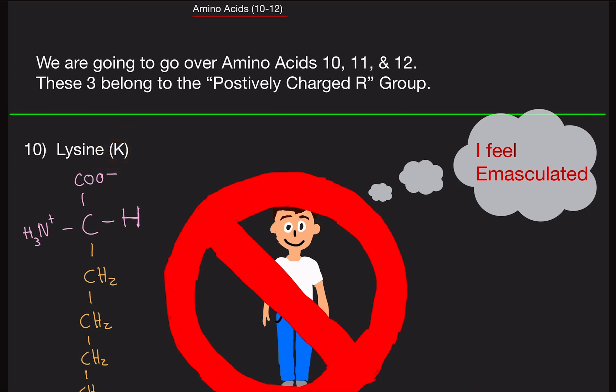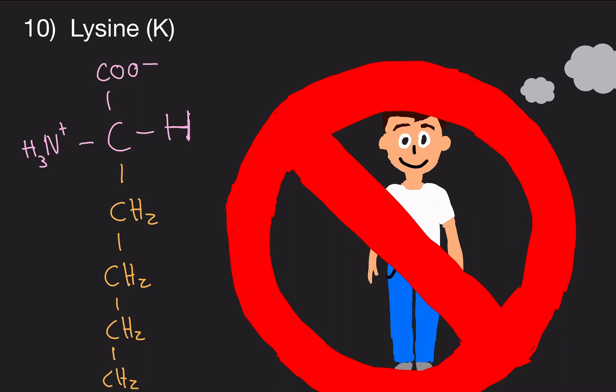This is the first one. Lysine is the 10th amino acid we're going to talk about. It's abbreviated with the K. We've got our usual stuff - alpha carbon, hydrogen, carboxyl group, amino group.